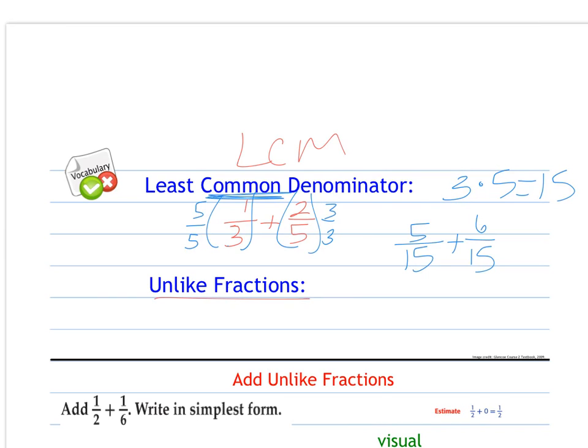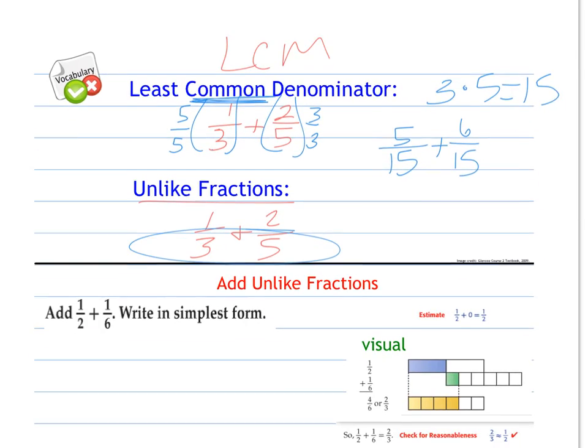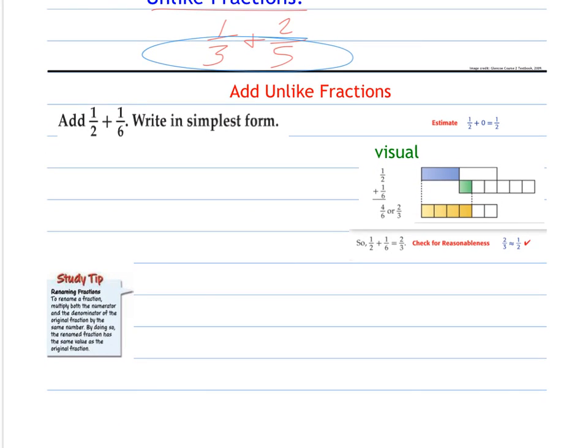So unlike fractions are fractions that have not the same denominator. So for example, one third and two fifths are unlike, because their denominators are different. So to add unlike fractions, we need to change them to have a least common denominator. Least common denominator is similar to least common multiple. It's the least common multiple of the denominators.